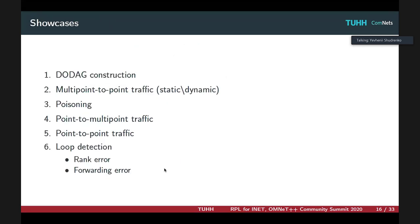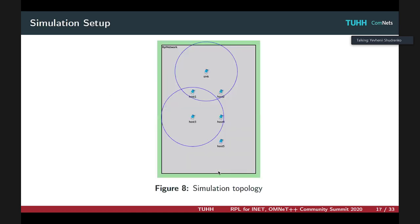Next, I'll demonstrate some of the prepared showcases exemplifying various features and minimal working examples that can be used with this RPL implementation. We'll start with the most basic topology construction process. For all showcases shown next, the following network is considered consisting of six nodes, five sensors or hosts and one sink.